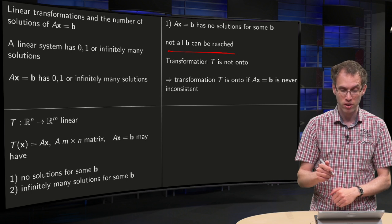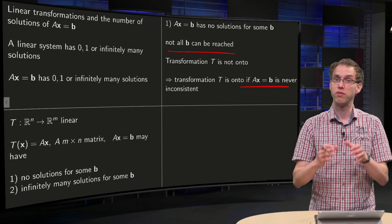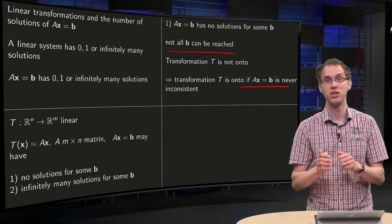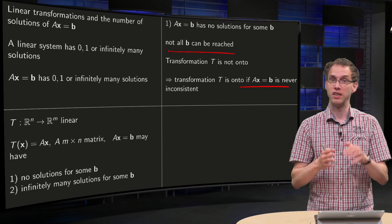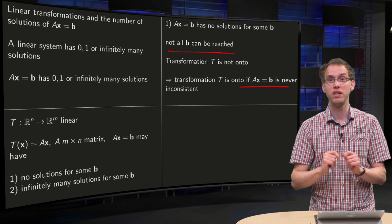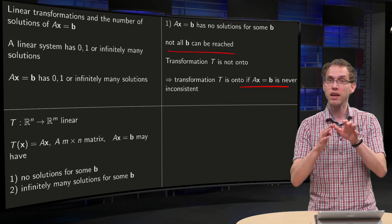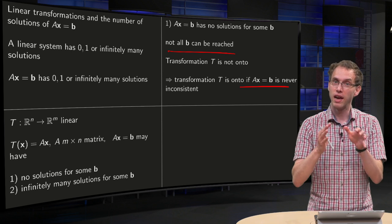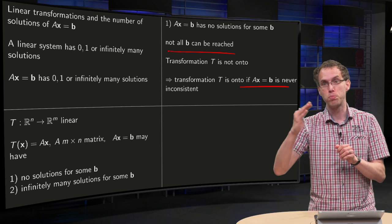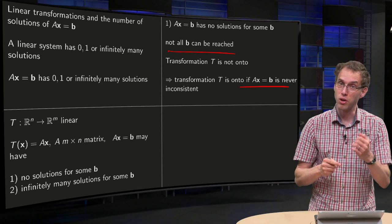In that case, your transformation is not onto. So when is your transformation onto? Your transformation is onto if Ax equals b is never inconsistent, meaning Ax equals b always has either one or infinitely many solutions. An inconsistent system corresponds to a transformation that is not onto.